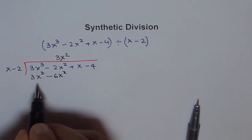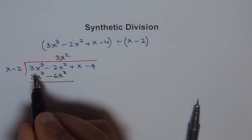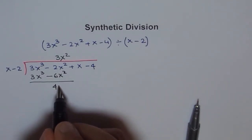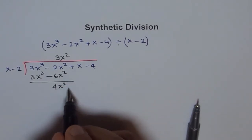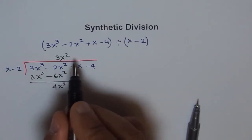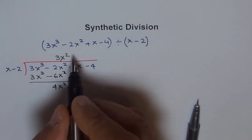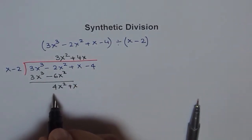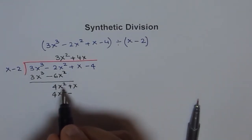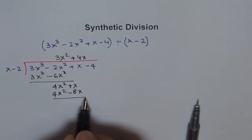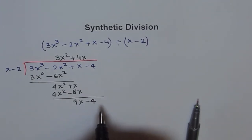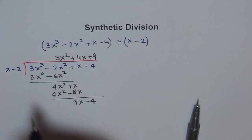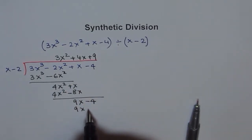We subtract: 3x³ minus 3x³ is 0, and we get 4x². We bring down the next term plus x. To eliminate 4x² we multiply by 4x, giving 4x² minus 8x. Subtracting and bringing down minus 4 leaves 9x minus 4. Then x minus 2 goes into this 9 times: 9 times x is 9x, and 9 times negative 2 is minus 18.